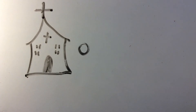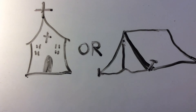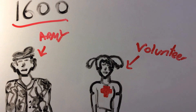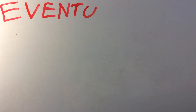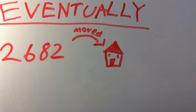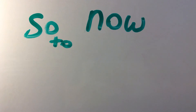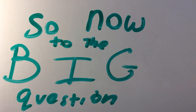210,000 were evacuated to government shelters, such as schools and churches. 1,600 people, such as military and volunteers, worked as national aid. And eventually, 2,682 people were rehoused into permanent and safe homes.